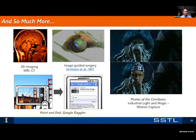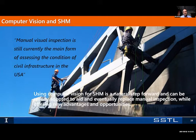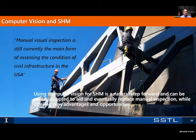So how does that relate to civil engineering? Computer vision and structural health monitoring seem like they naturally go together. Currently, manual inspection is the main form of assessing the condition of civil infrastructure in the US. Using computer vision for structural health monitoring seems like a natural step forward and could readily aid and eventually replace manual inspection, offering new advantages and opportunities.